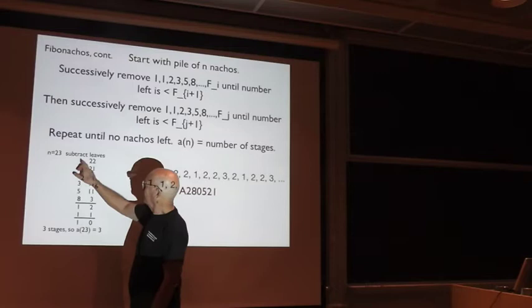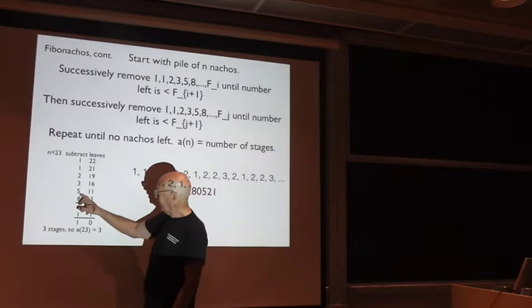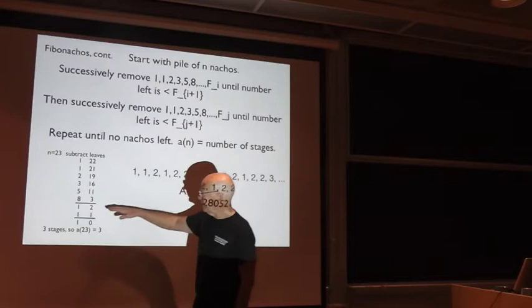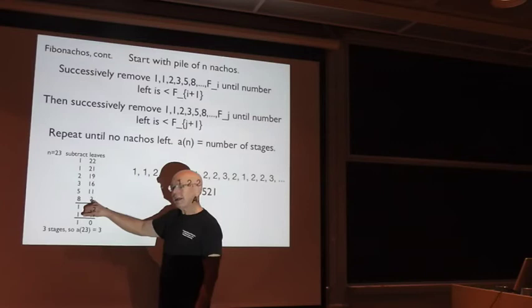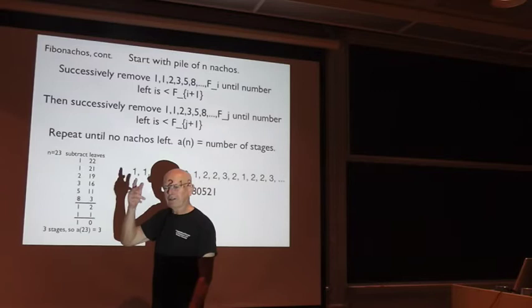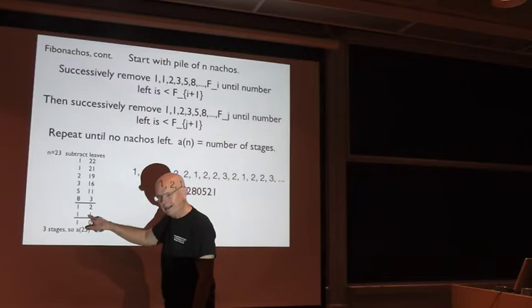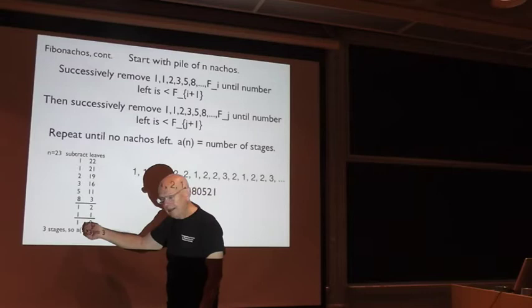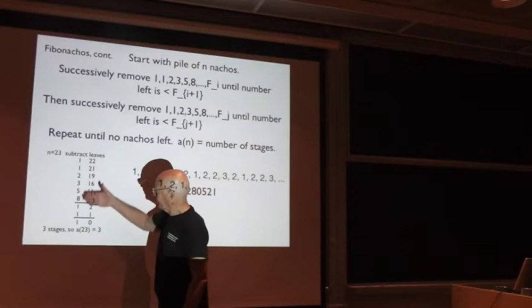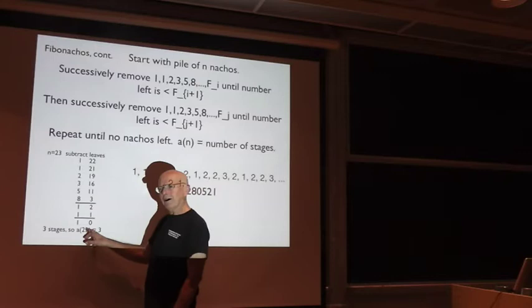Say we have 23 nachos to start off with. We successively remove Fibonacci numbers from the pile. First we remove 1 and then 1 and then 2. So after we've removed 1, we have 22. We take another 1, 21. We take 2 more, 19. We take 3, now there are 16 left. We take 5 away and we're down to 11. We take 8 away and we're down to 3. And we can't, the next Fibonacci number will be 13, so we can't remove 13 but we still have 3 left. So we start again. So we take the 3 and we remove Fibonacci numbers. So we remove 1 and we've got 2 left. We remove 1 again, so the Fibonacci numbers in this case are 1, 1, 2, 3, 5. We ignore the 0. We remove 1 again from the 2 and there's 1 left. The next Fibonacci number will be 2 and we can't subtract 2 from 1 so we start again and we remove 1 from the 1 and we're left with 0. So there were 3 stages before we got to 0. So that's the third Fibonaccio, which shows number is 3.